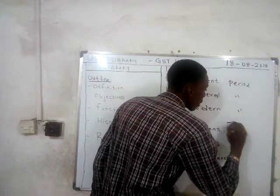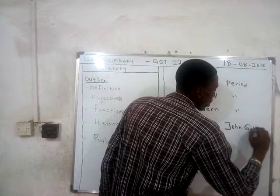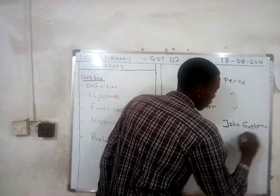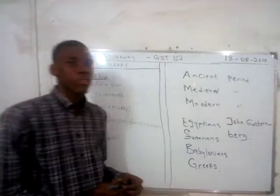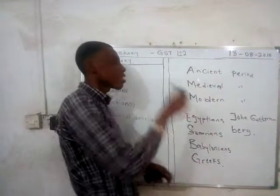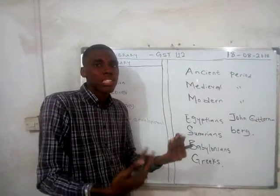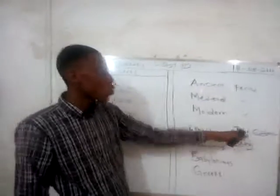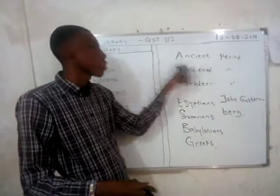John Gutenberg's introduction of the printing press was a defining moment of the medieval period. With the introduction of the printing press, writing was no longer done manually — machines were beginning to surface. John Gutenberg was the highest influence on the medieval period.